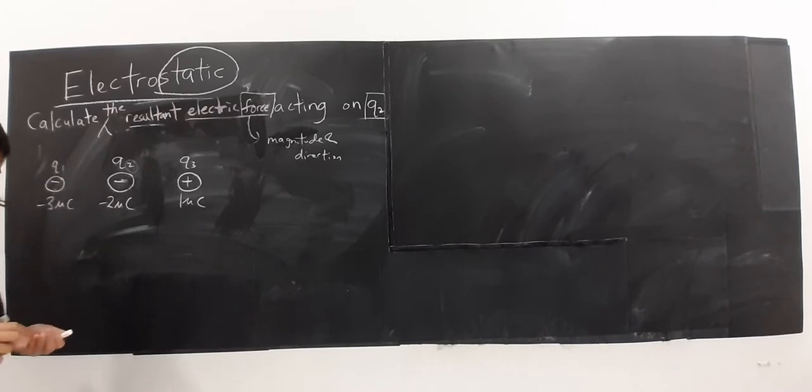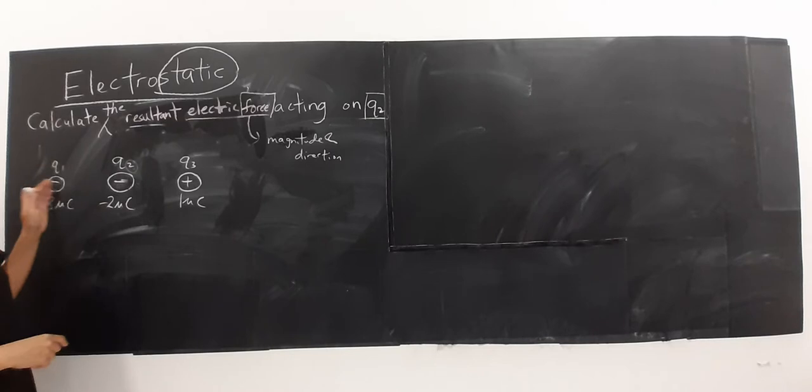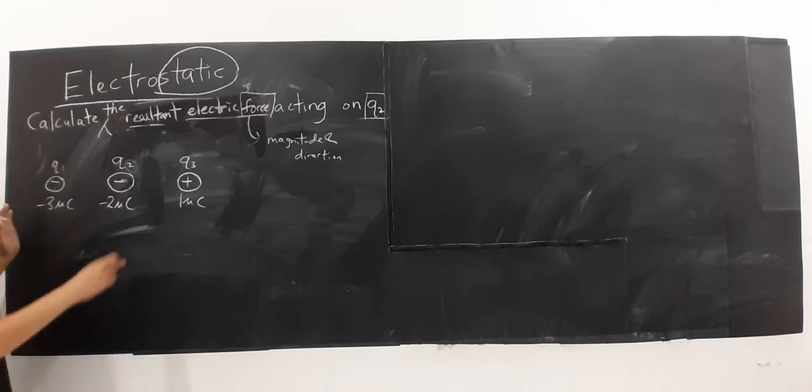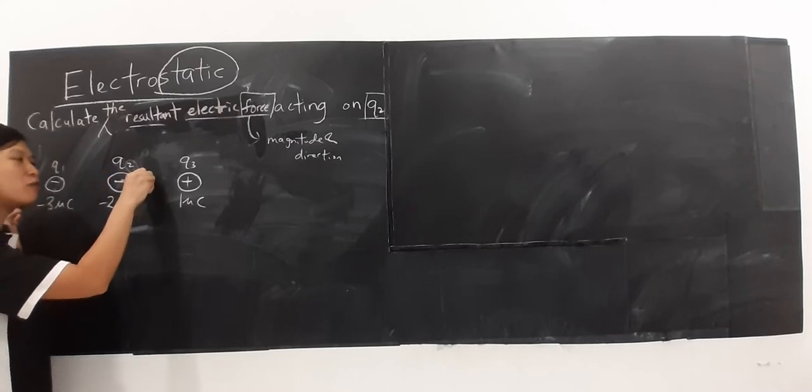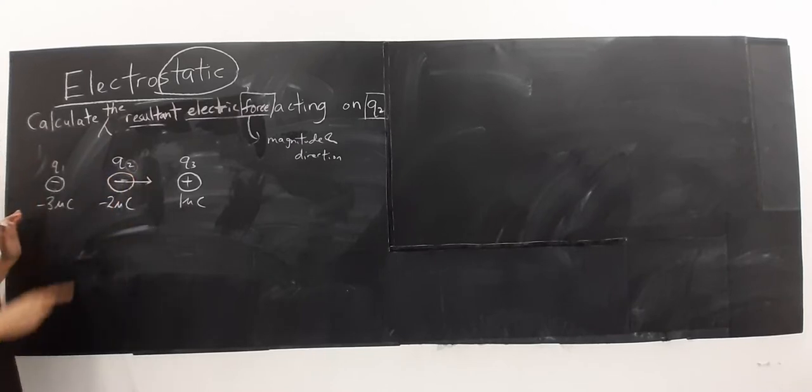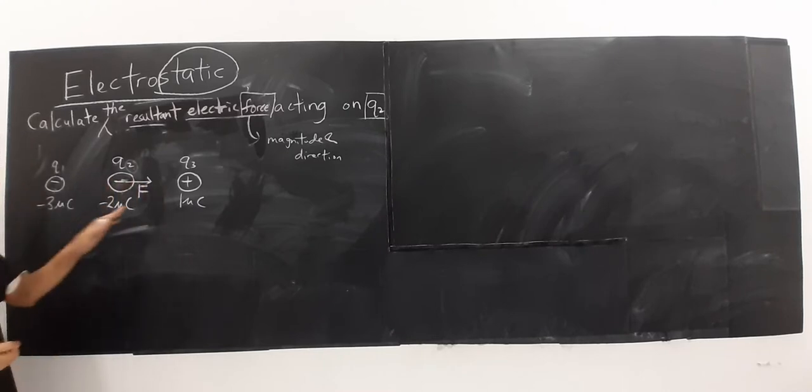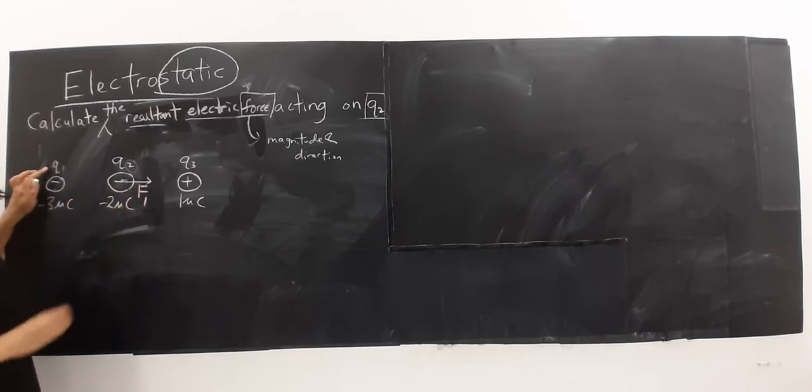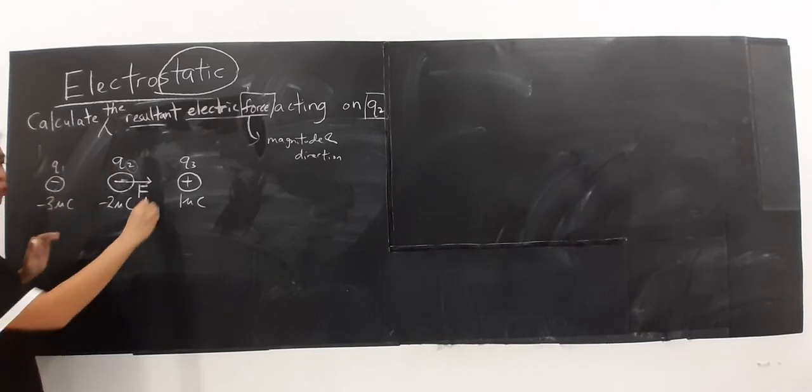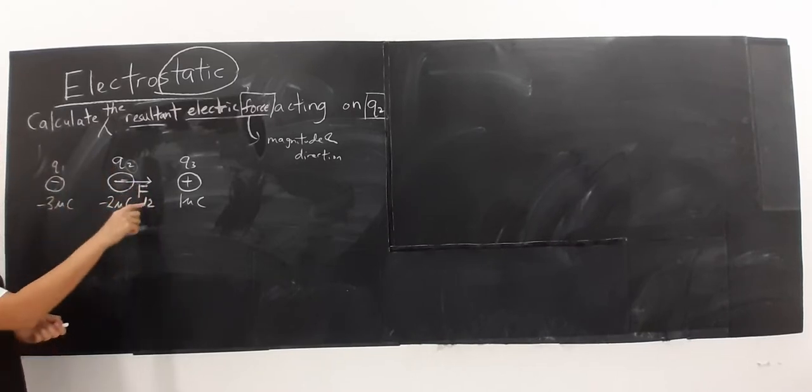So in this case, negative-negative, charge yang sama repel. Repel, maka arah force ini menjauhi Q1. So we have force dari charge 1 ke Q2. So we have F1,2 here.